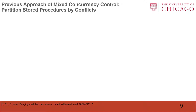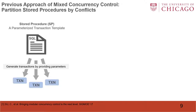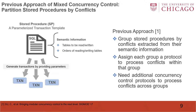One previous approach of mixed concurrency control is to partition stored procedures by conflicts. A stored procedure is a parameterized transaction template. Users can provide parameters to generate transactions. It includes semantic information of tables to be read or written, or orders of reading/writing tables. The previous approach groups stored procedures by conflicts extracted from their semantic information, assigns each group a protocol to process conflicts within that group, and introduces additional concurrency control protocols to process conflicts across groups.